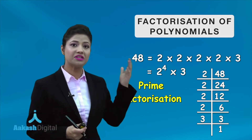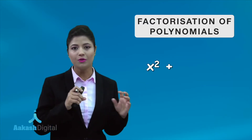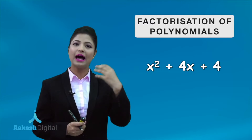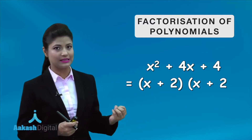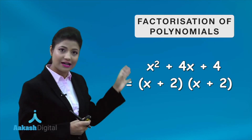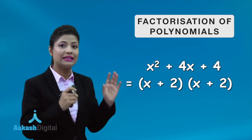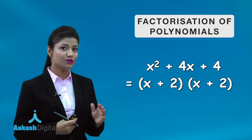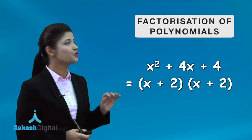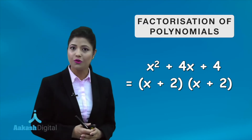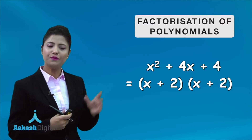Breaking a number into smaller parts makes arithmetic operations easier. In the same way, when we talk about polynomials, to apply basic operations on them we break them into smaller parts — that means we do the factorization of the polynomials. This helps save time while solving questions related to polynomials.